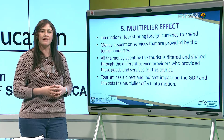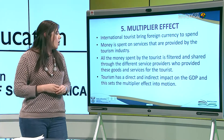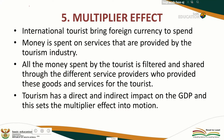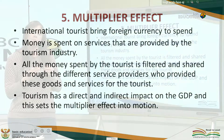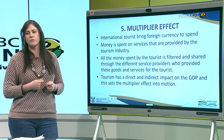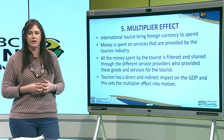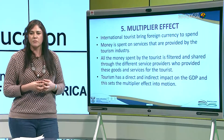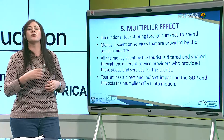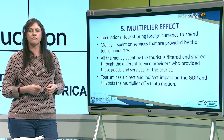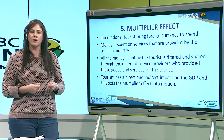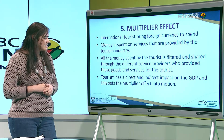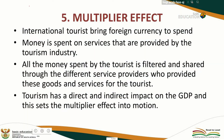All money spent by the tourist is filtered and shared through different service providers who provided goods and services. The money is used in the local community — as soon as money is spent at a hotel or attraction, staff need to be paid, and that staff then spends their salary at local shops like Shoprite or Checkers. The money keeps circulating in the economy. Tourism has a direct and indirect impact on the GDP, setting the multiplier effect into motion.